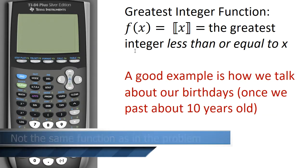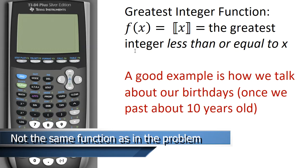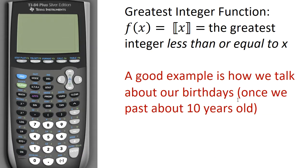Let's consider the standard greatest integer function, where f of x is the greatest integer of just x. This means the integer less than or equal to x, and you may not realize it, but you're already well familiar with this function. After you're about 10 years old, a good example of how we talk about our birthdays is the greatest integer function. If you're 29 years and one day, you call yourself 29 years old. If you're 29 years 200 days, you call yourself 29 years old. If you're 29 years 364 days — only one day away from being 30 — you still call yourself 29 years old. That's an example of a greatest integer function.